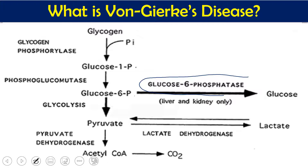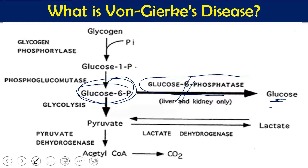This glucose-6-phosphate has multiple fates. It can be metabolized to glucose by glucose-6-phosphatase, and that glucose is used for different purposes — it can go into blood circulation. Alternatively, glucose-6-phosphate can directly enter glycolysis and be metabolized to pyruvic acid for further processes. If we don't have glucose-6-phosphatase, glucose-6-phosphate will not be converted to glucose and will accumulate in the cell.